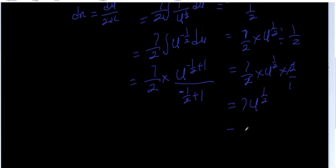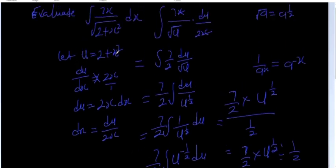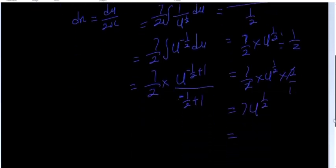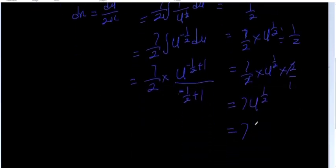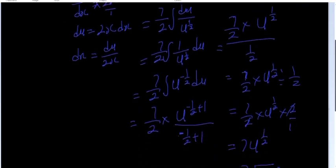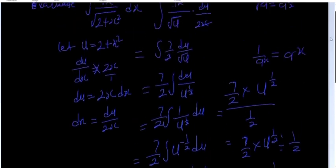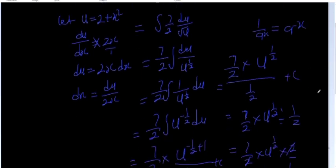Now substitute back the value of u. Since u equals 2 plus x squared, you replace u raised to power half with root of (2 plus x squared). Then you add the constant of integration C, since this is an indefinite integral. So the final answer is 7 root(2 plus x squared) plus C.